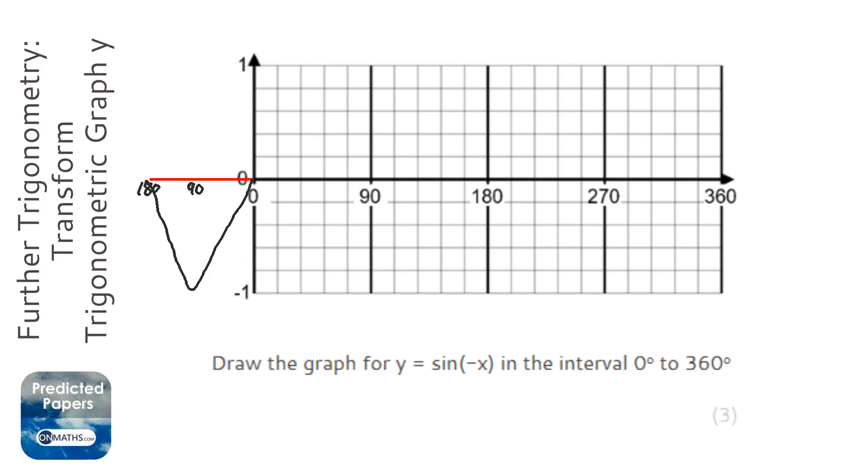So with this we're going to put into our calculator a value of x but then we're going to negate it before we type in sine. So when I type in, say, 90, the calculator thinks I'm actually here at minus 90.